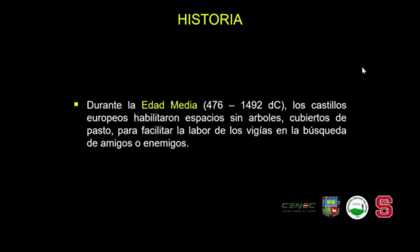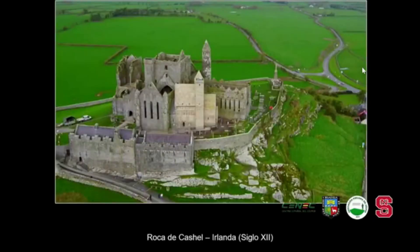Con la caída del Imperio Romano y la llegada de las tribus bárbaras, Europa se volvió un lugar peligroso, y los señores feudales de la época comenzaron a construir grandes castillos feudales para protegerse. Una de las primeras cosas que hicieron fue cubrir de pasto gran parte del área alrededor de estos castillos para facilitar la labor de vigilancia en la búsqueda de amigos y enemigos. Se puede observar una imagen del Rock of Cashel en Irlanda como ejemplo de estos pastos alrededor de castillos feudales.